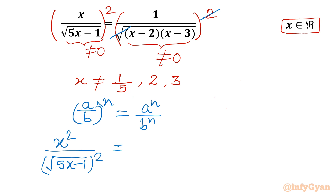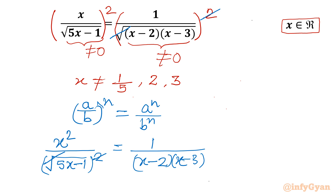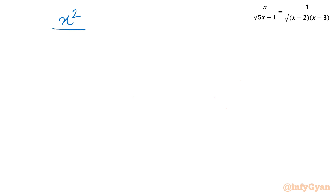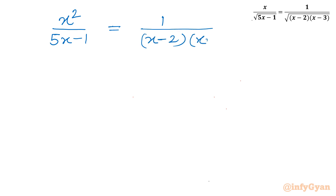On the right hand side it will be 1 over (x minus 2)(x minus 3). Now I will consider cancellation — the square and square root cancel — so it is left with x squared over (5x minus 1). So the equation becomes: x squared over (5x minus 1) equal to 1 over (x minus 2)(x minus 3).